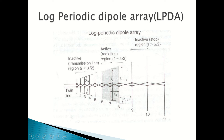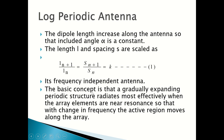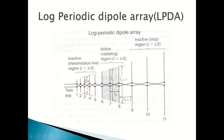The next type is the log periodic dipole array. Its principle is very similar to Yagi-Uda antennas. It consists of dipoles of different lengths. If a dipole's length is greater than λ/2 it acts as a reflector, the active dipole is near λ/2, and if length is less than λ/2 it acts as a director. These dipoles are connected using a twin line, and as you go forward the length increases. The ratio of adjacent element lengths l_(n+1)/l_n and adjacent spacings s_(n+1)/s_n are both equal to a constant k.